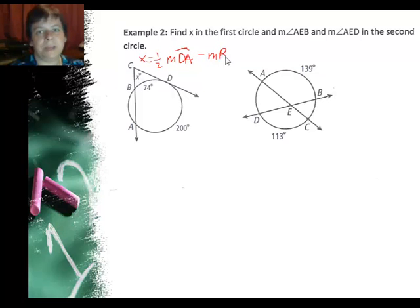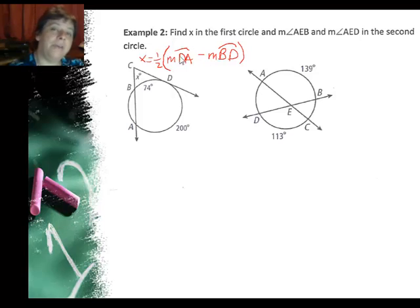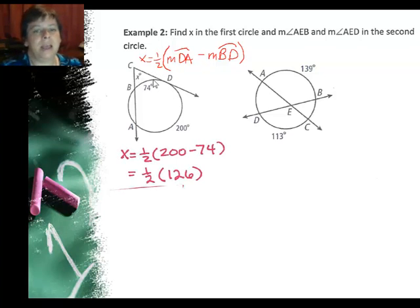Using the theorem from before I can say X is going to be half of arc DA minus arc BD, the measure of arc BD. Now there's an important thing, if I were to use this right now the way it's written, the calculator will give me the wrong answer because it's only going to put the one half on the first one, so I really need parentheses on this to say calculate the difference first and then multiply by the one half. So using that I say that it's one half of 200 minus 74, 200 minus 74 is 126, half of that is 63.